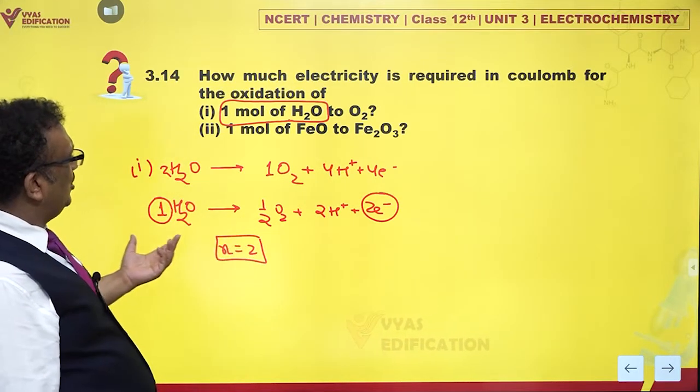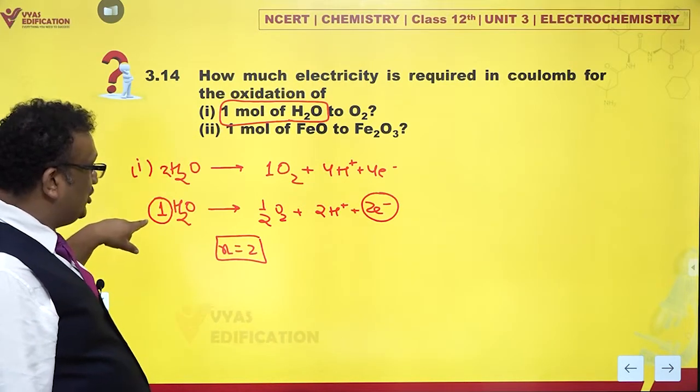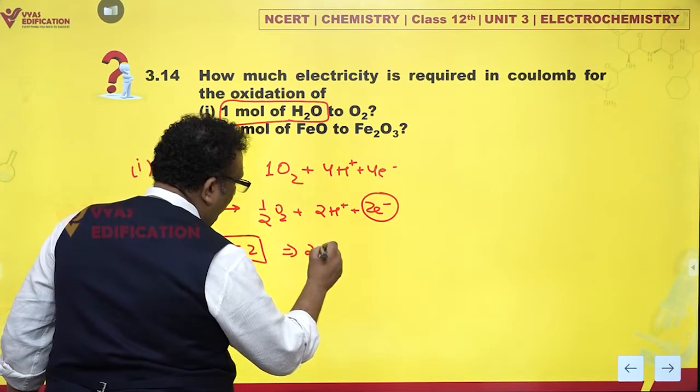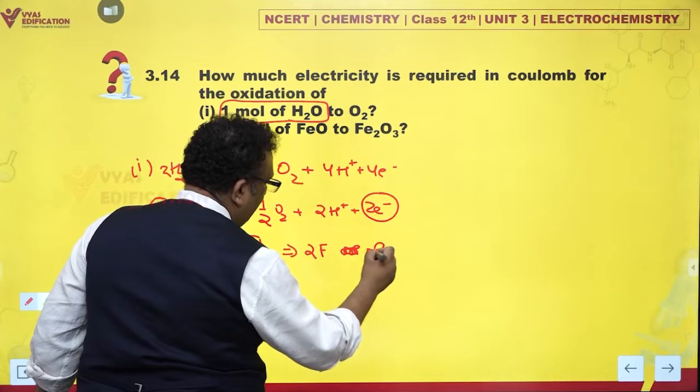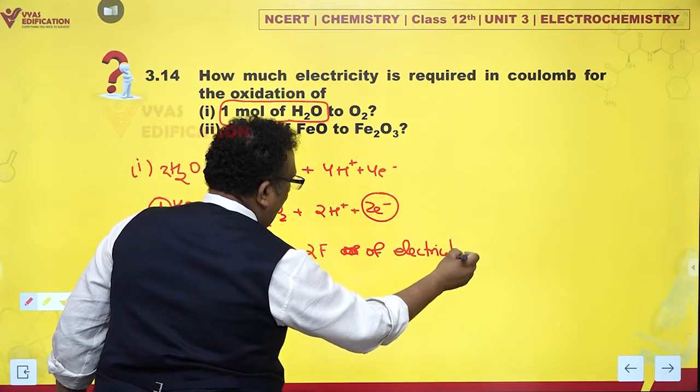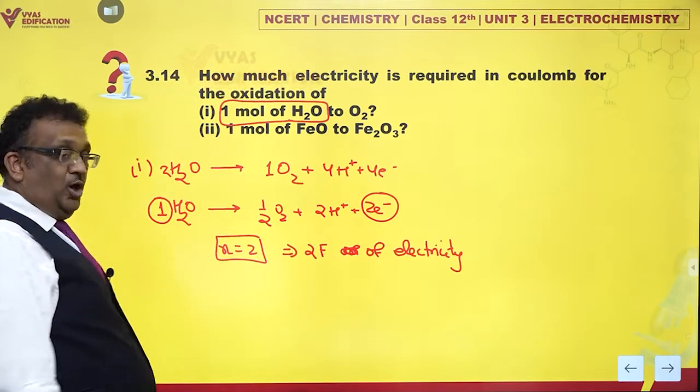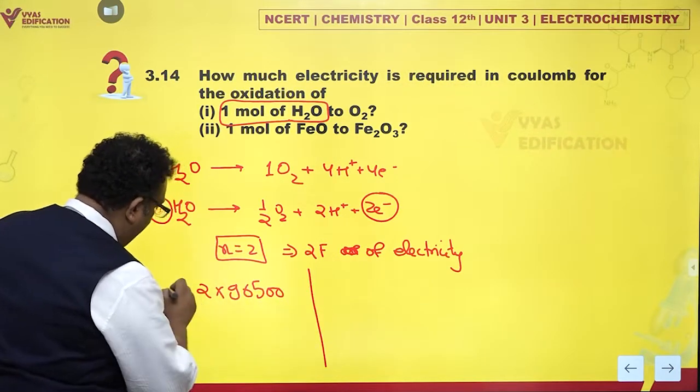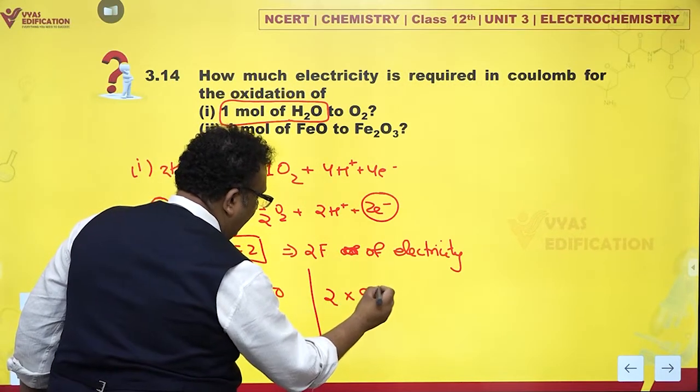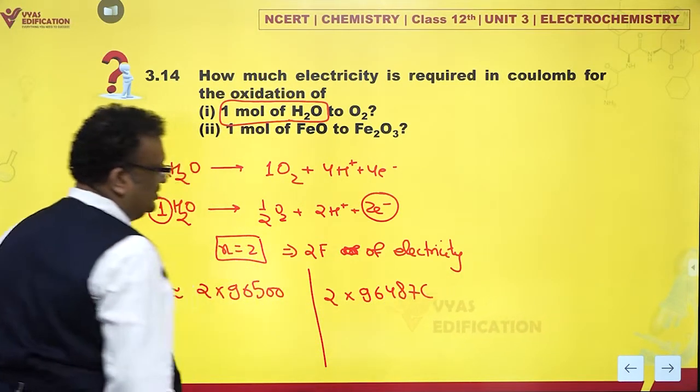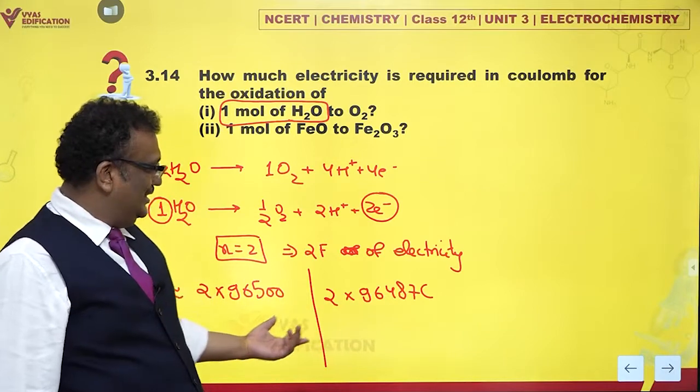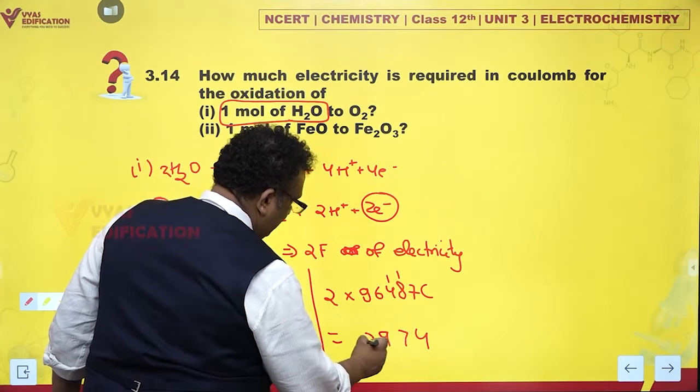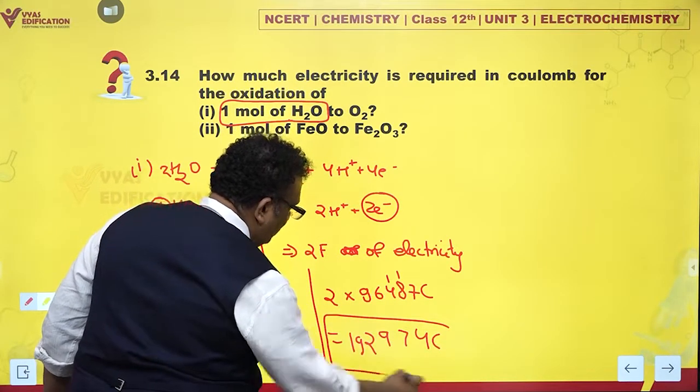How much electricity is required? I mean that's not very difficult to see. If I take one mole of H2O, I get two moles of electrons. That means two Faradays of electricity is required. In coulombs, well I can do this in coulombs also: 2 into 96500 approximately, or accurately 2 into 96487 coulombs, whichever suits you. I'll go for the accurate answer. So so many coulombs would be required for case one. Simple.